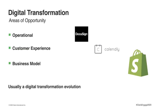Digital transformation means using digital technology to solve problems, and there are three main areas you might digitally transform. Starting with your internal organization — digitally transforming internal processes such as onboarding, supply chain management, getting relevant data from emails, invoices, inventory, or contracts. DocuSign is a good example of a digital tool for contract signing that can help your internal organization.